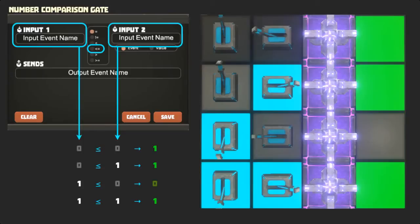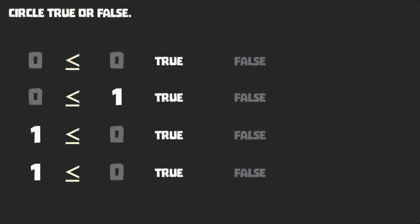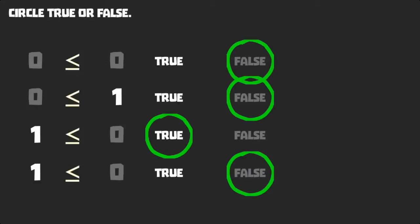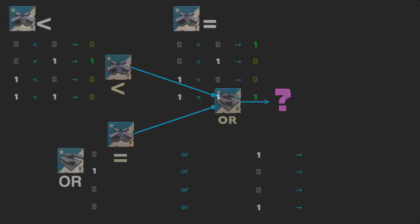We can look at each combination of inputs as true-false problems with the statement input 1 is less than or equal to input 2. Or we can think of it as a special combination of machines we already know. Imagine a less than comparator and an equals comparator hooked up to an OR logic gate. If the two comparators shared switches, what would the OR's outputs be?